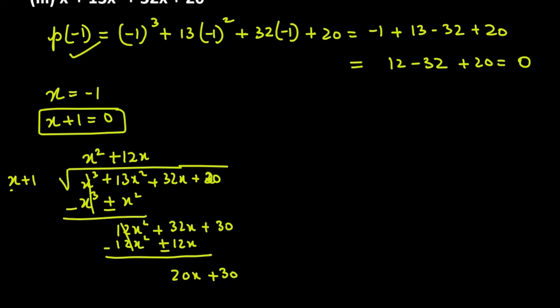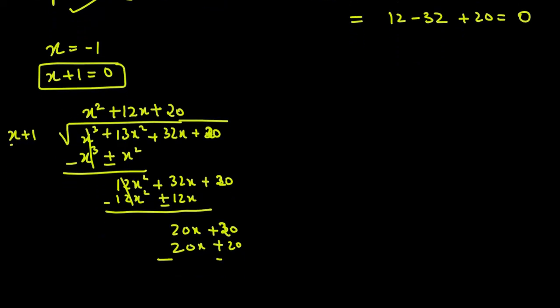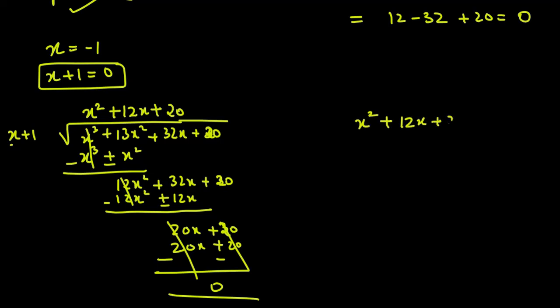Now to make x into 20x, multiply by 20. So 20x plus 20. After sign change: 20x cancels with 20x, and 20 minus 20 gives 0. The remaining polynomial is x square plus 12x plus 20, from which we can get 2 more factors.